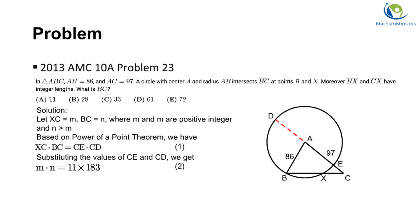In equation 2, we have two integer variables. To solve problems involving integer variables, factorization is a powerful technique. We do prime factorization on the right side of equation 2 to get equation 3.